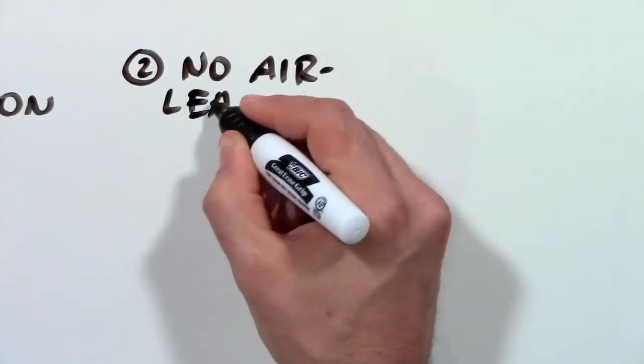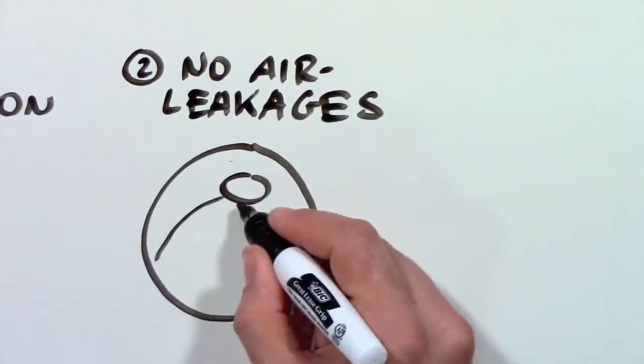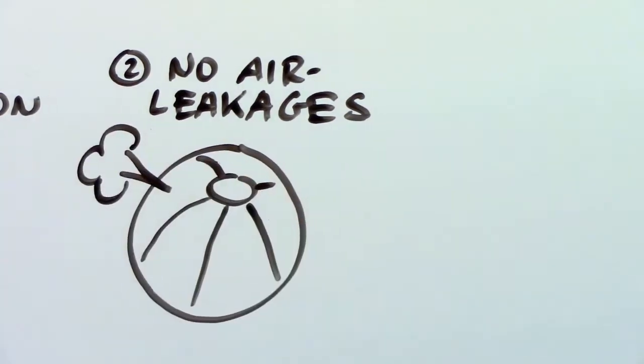2. No air leakages. There should be no holes, small or large, to let hot air out of the house.